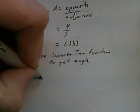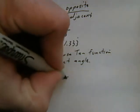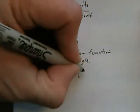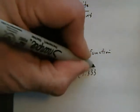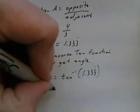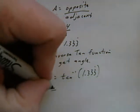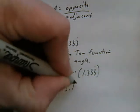So, I will say angle A equals tan negative 1 of 1.333. So, if I plug that into my calculator, what I get is 53.1 degrees.